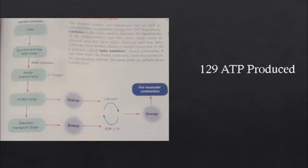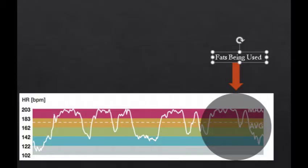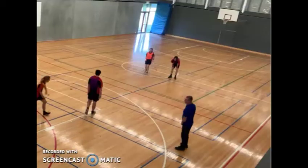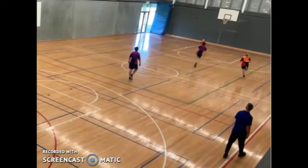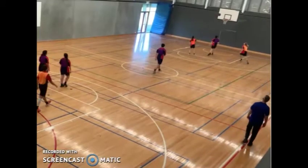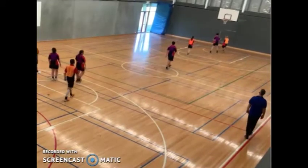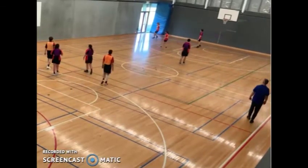When fat is broken down through the aerobic glycolysis system, a total of 129 ATP is produced. During this process, oxygen demands are high, with ATP synthesis requiring a much higher amount of oxygen due to its larger yield. This is visible in the game — during the last 10 minutes, I was not making efforts to regain possession or defend as my body's demand for oxygen had risen due to trying to break down fat.